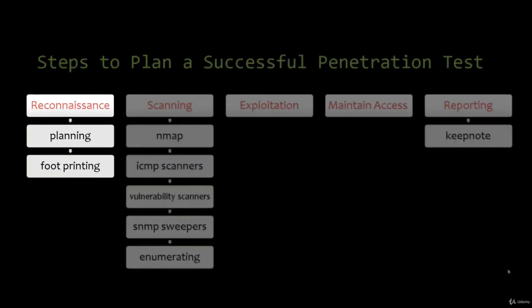The first phase is reconnaissance. The attacker tries to gain information about the target. This approach can be active or passive. The attacker tries to have a blueprint of the security profile of the target, whether it's an organization or a person. It involves gathering information about the network and creating a profile of the organization's networks, systems, and applications.